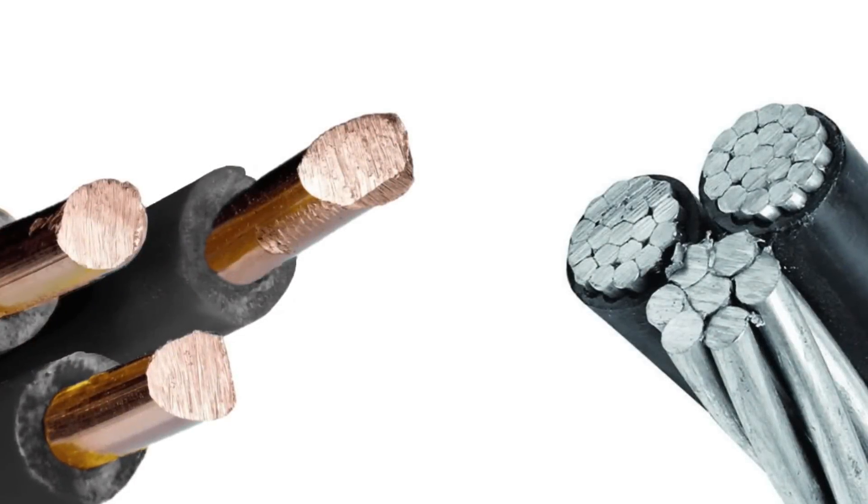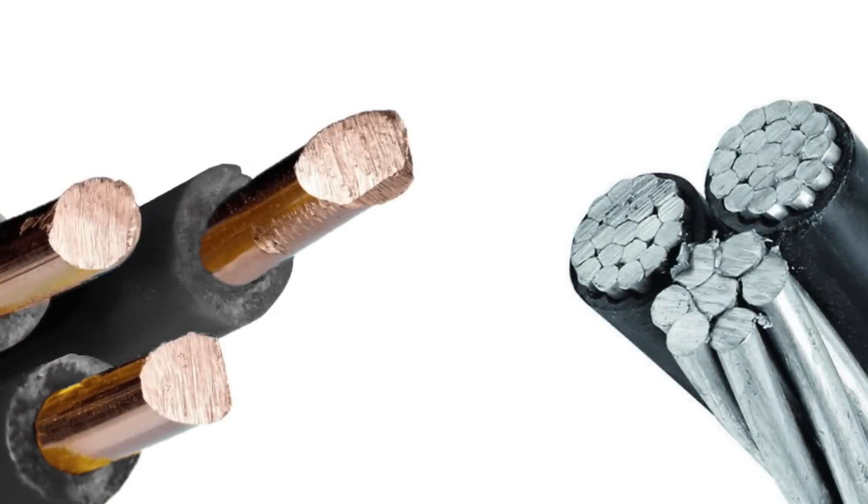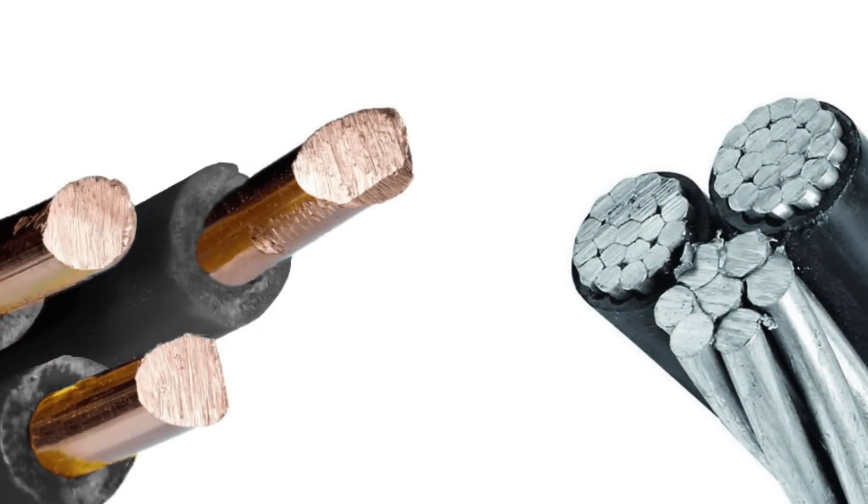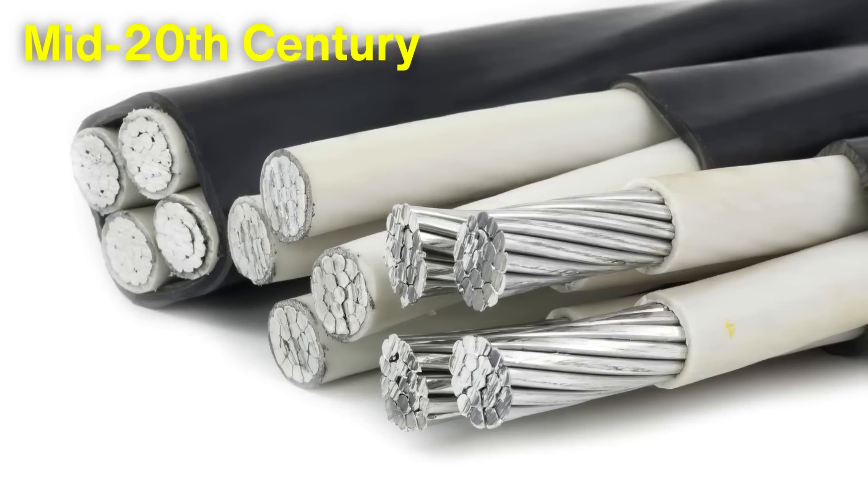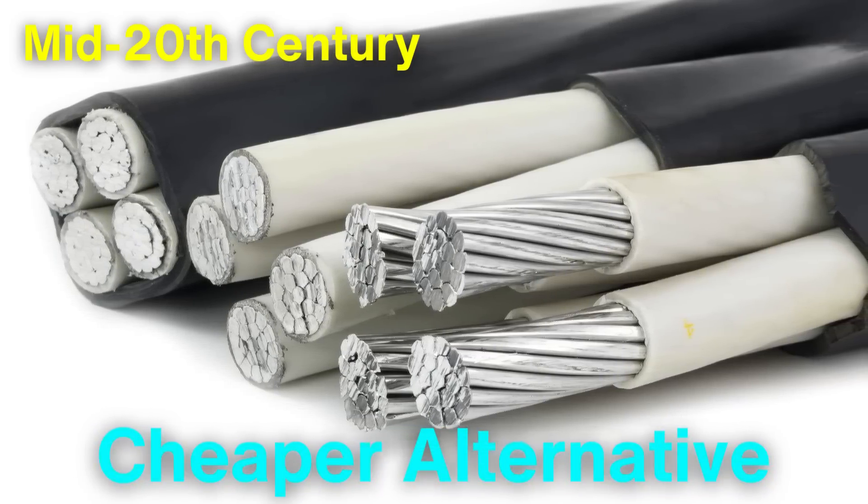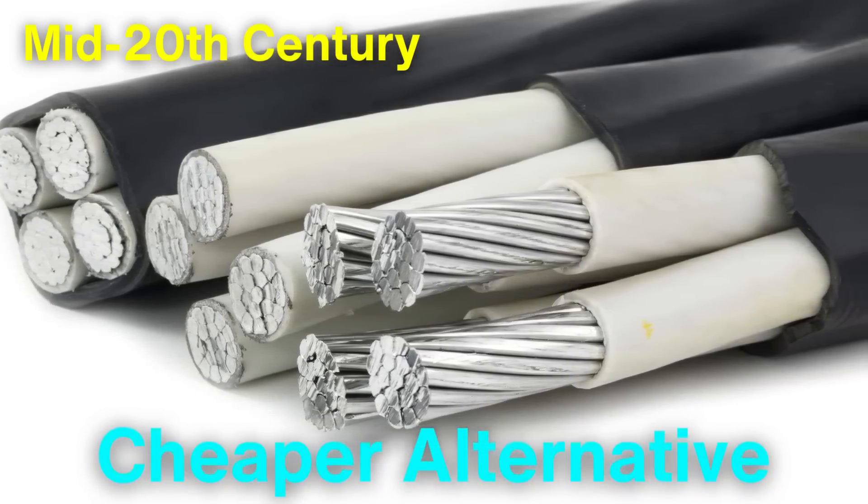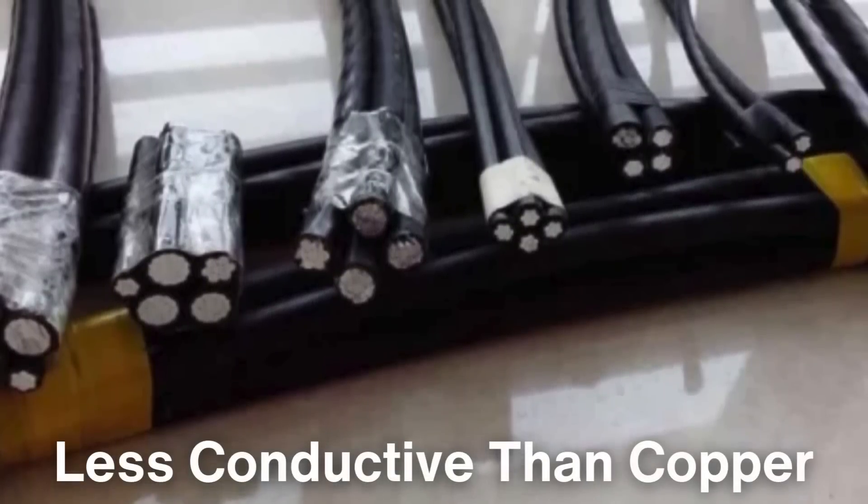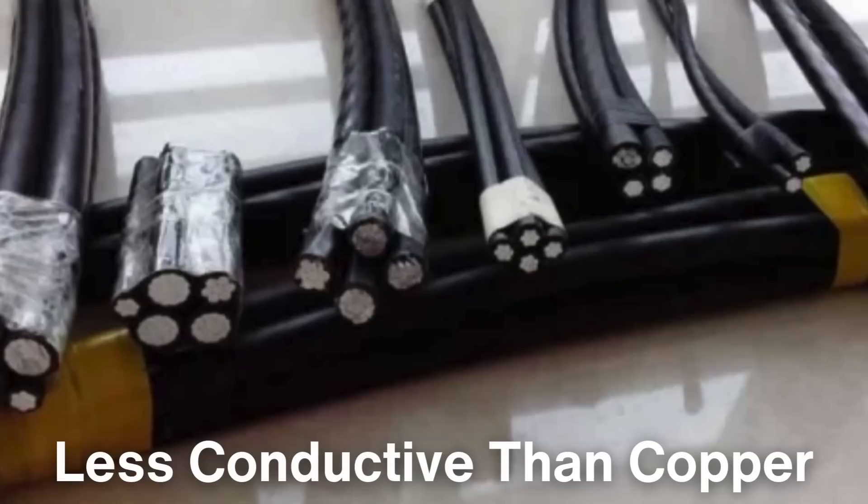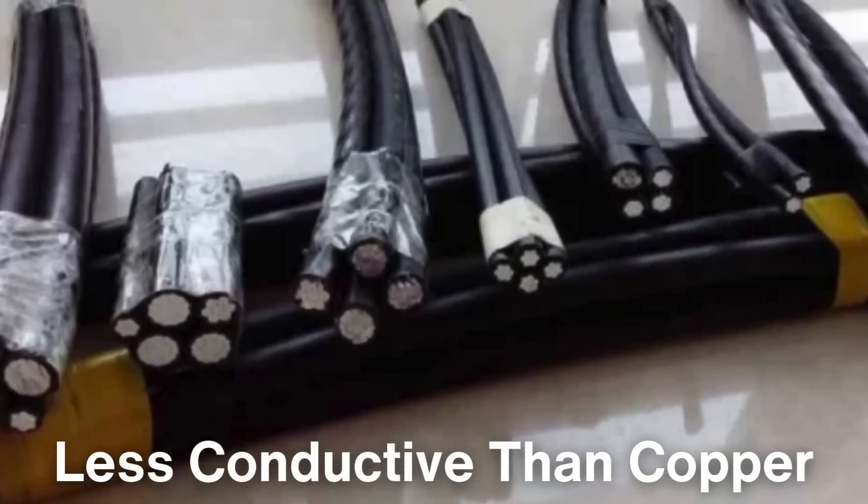Comparing copper to other materials like aluminum helps highlight why copper remains the top choice. Aluminum wiring was popularized in the mid-20th century as a cheaper alternative, but it came with several drawbacks. While aluminum is lightweight and cost-effective, it is less conductive than copper, which means larger wires are needed to carry the same amount of electrical current.